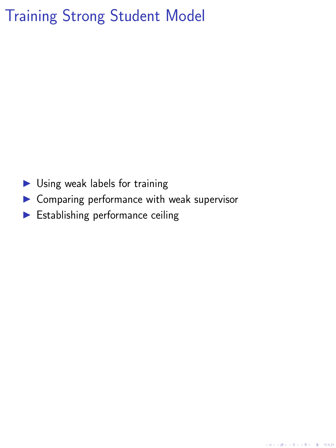Next, we train a strong student model using the weak labels generated, and compare the performance of this strong student model with the performance of the weak supervisor. To establish a performance ceiling, we also fine-tune a strong model using ground truth labels, which allows us to compare the strong student model's performance with the best possible performance.